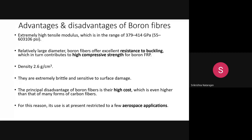The advantages of boron fiber include a high tensile modulus of around 379 to 414 GPa, as expected for a high performance fiber. It has a large diameter giving good resistance to buckling under compressive force. The silicon carbide coating in borsic fiber reduces reactivity toward metals and also increases axial compressive strength. Boron fibers generally have good resistance to buckling and high compressive strength.